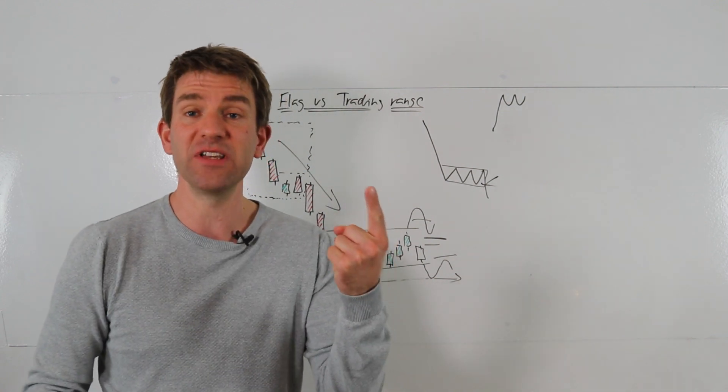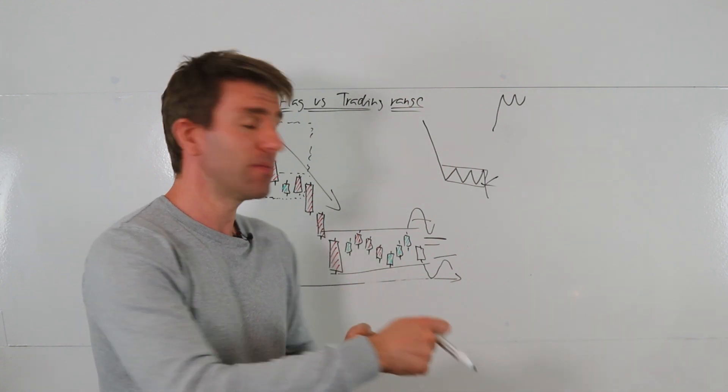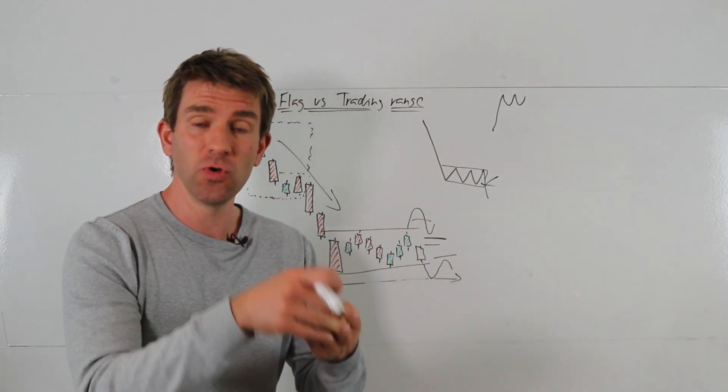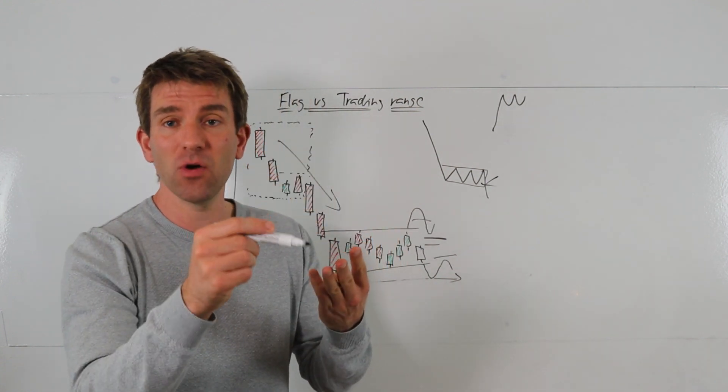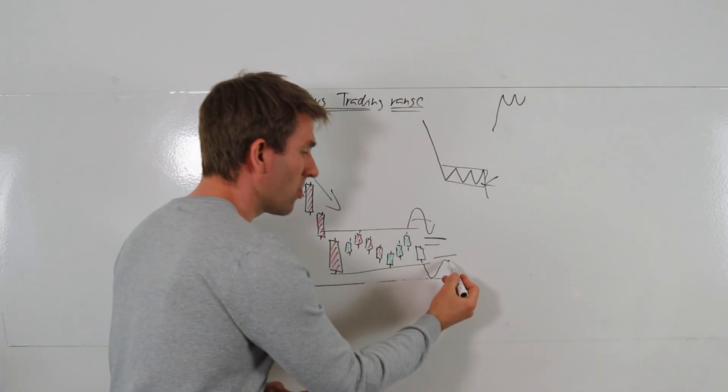It's pulled back up and failed to push back up into the range, number two. Number three, now it's rolling back over, so I've got my three kind of ducks in a row. And additionally, number four, I've now got a level to work my short off.